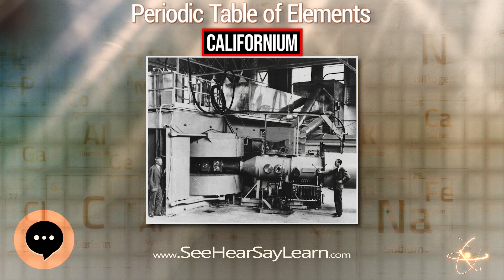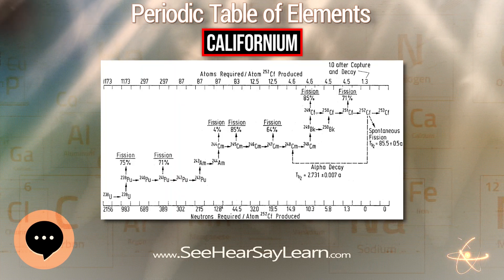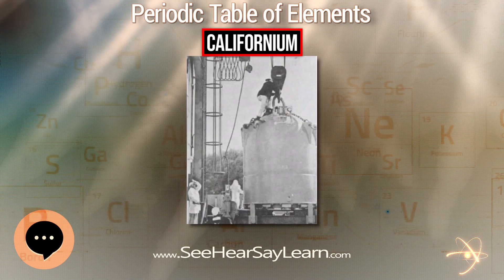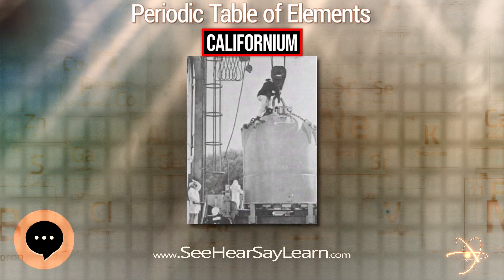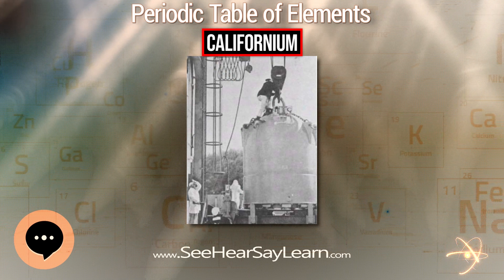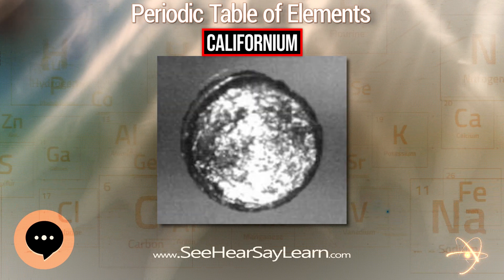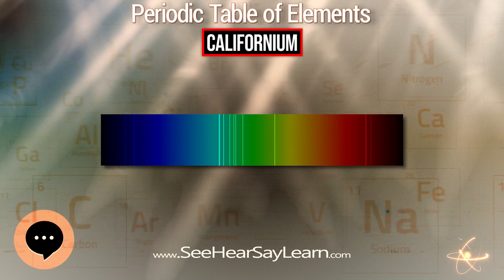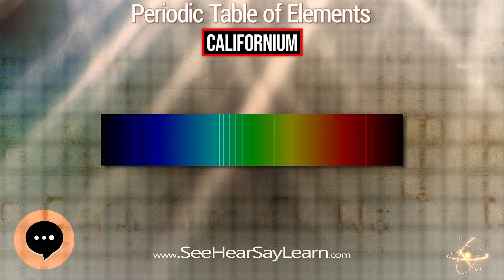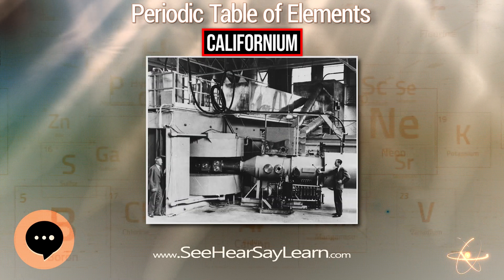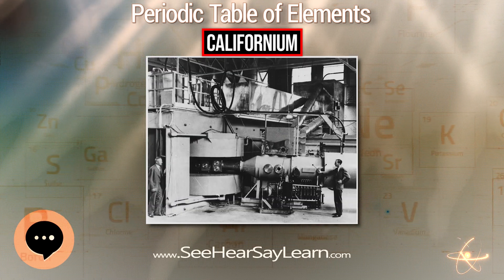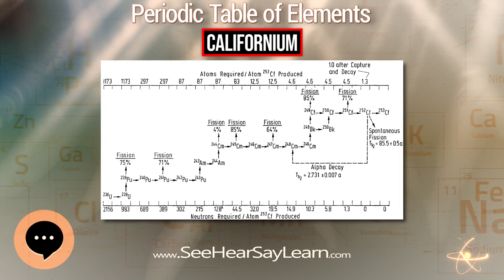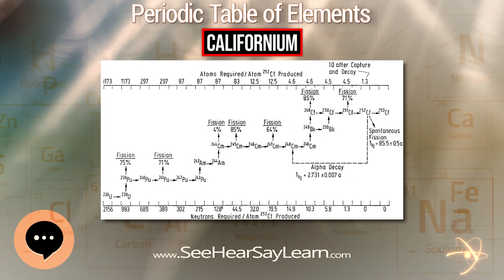Only about 5,000 atoms of californium were produced in this experiment, and these atoms had a half-life of 44 minutes. The discoverers named the new element after the university and the state—a break from the convention used for elements 95 to 97. However, the element directly above element 98, dysprosium, has a name that simply means 'hard to get to,' so the researchers decided to set aside the informal naming convention.